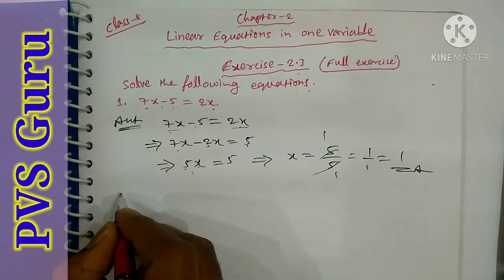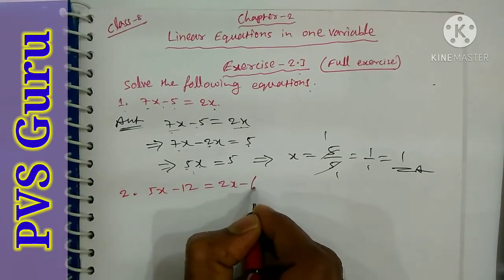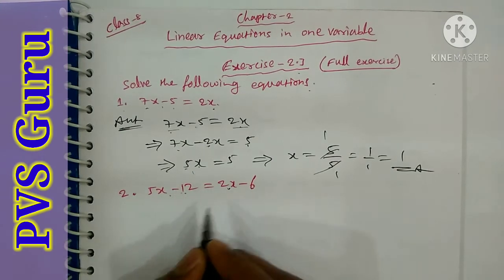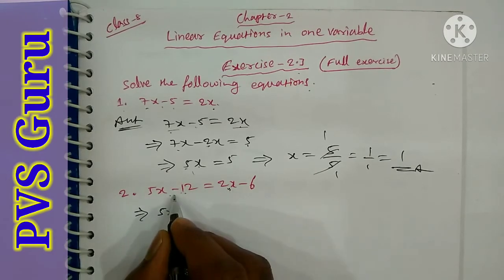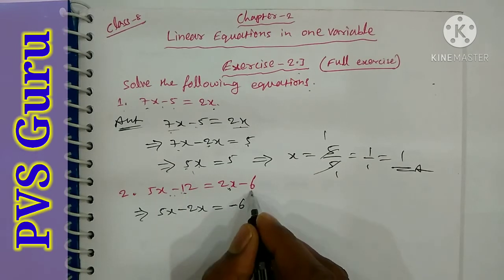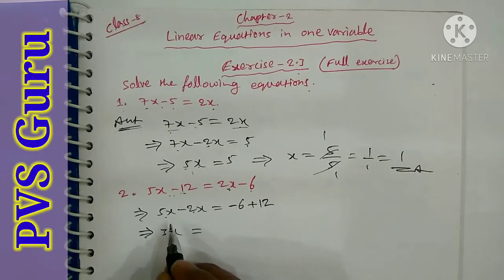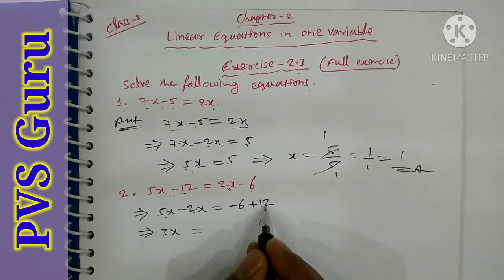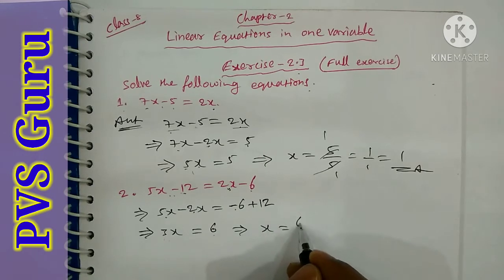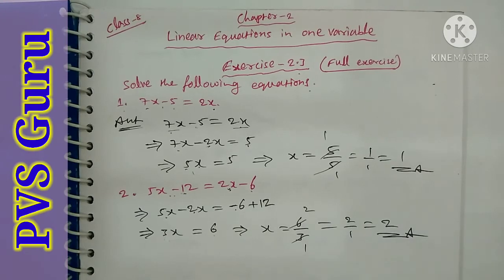Question number 2: 5x minus 2 is equal to 2x minus 6. Take 2x to the left side and 2 to the right side. So 5x minus 2x equals 3x, and minus 6 plus 2 equals minus 4... giving 3x equals 6, so x is equal to 2.